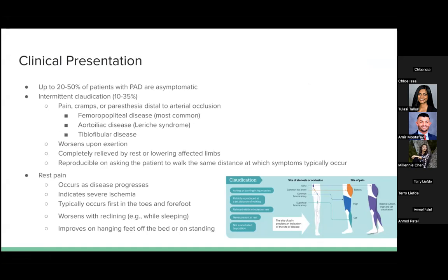Patients with intermittent claudication usually complain of pain that worsens upon exertion and is relieved by rest or lowering the affected limbs. You can reproduce this pain by asking the patient to walk the same distance at which symptoms usually occur. Other patients can present with rest pain, which occurs as the disease progresses and indicates severe ischemia. It typically occurs in the toes and forefoot, worsens with reclining, but improves with hanging the feet off the bed or standing.